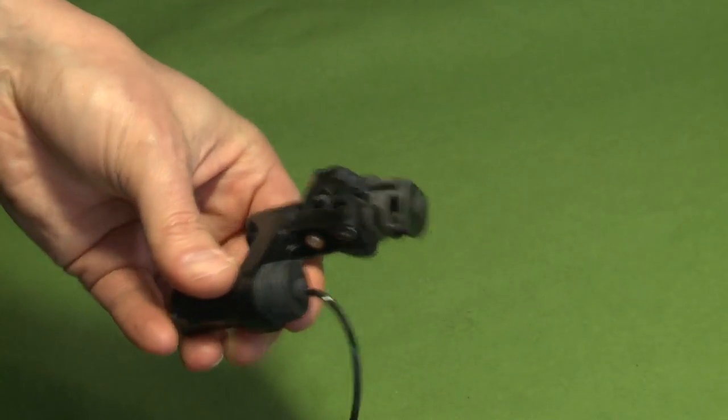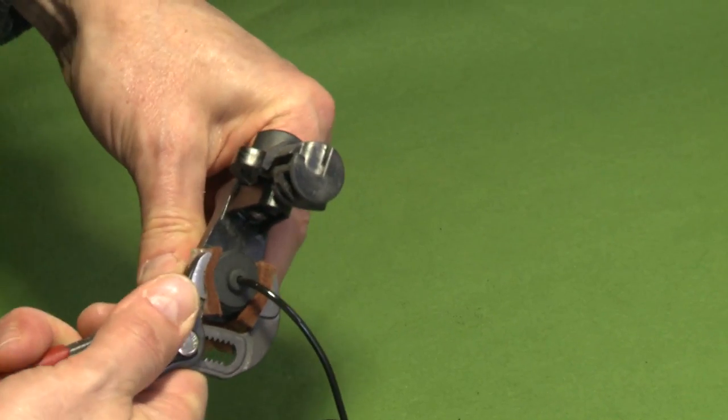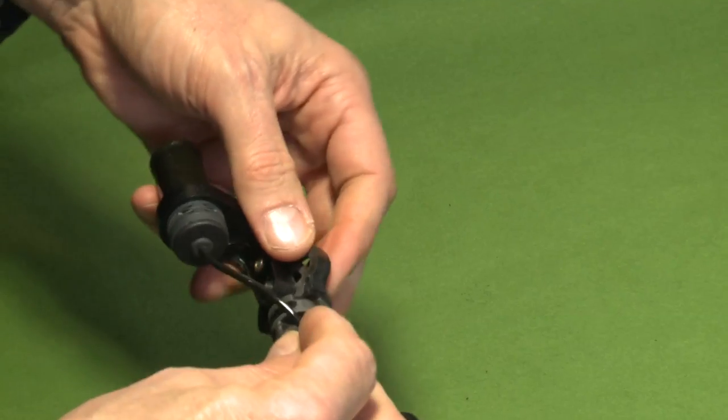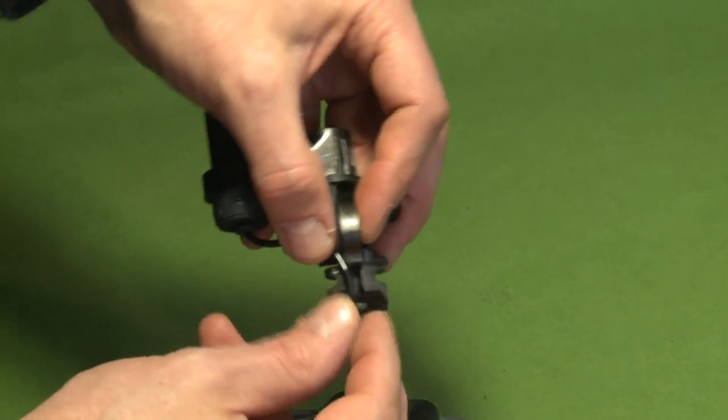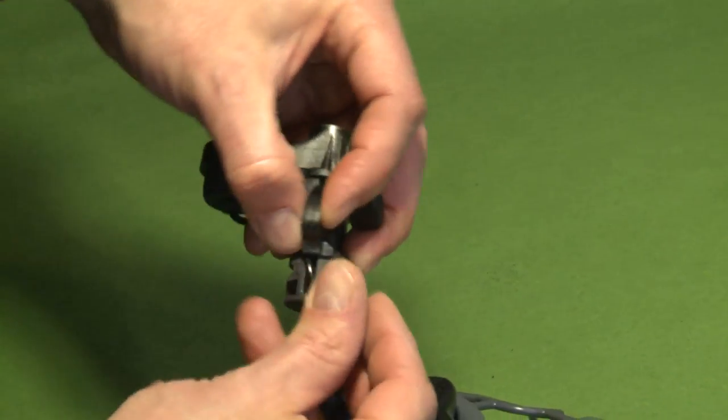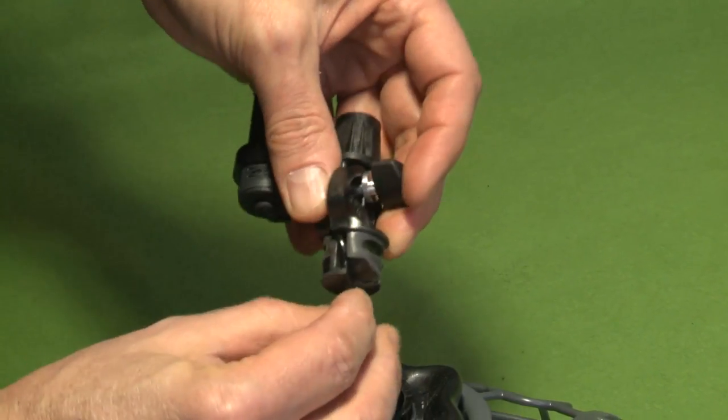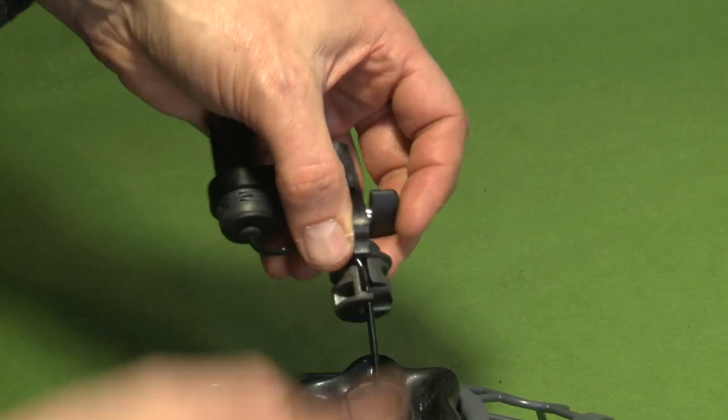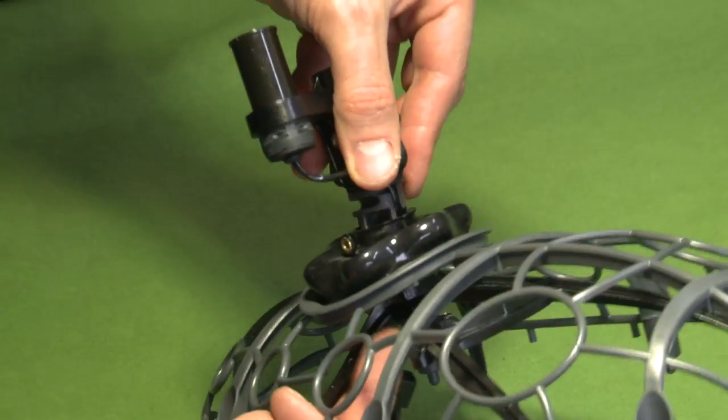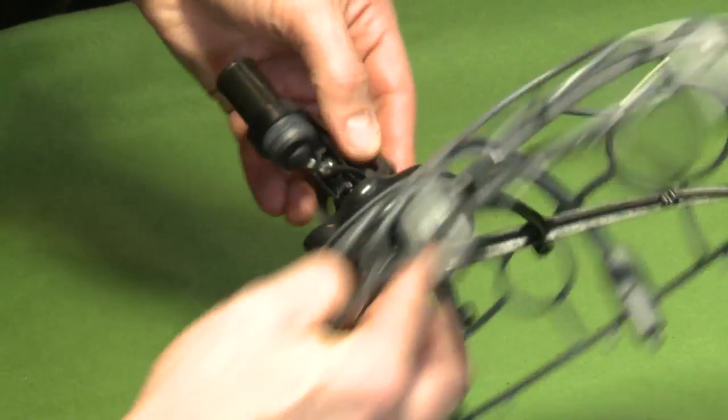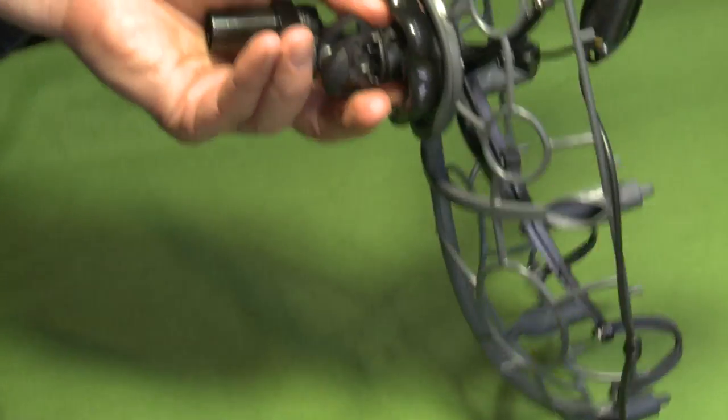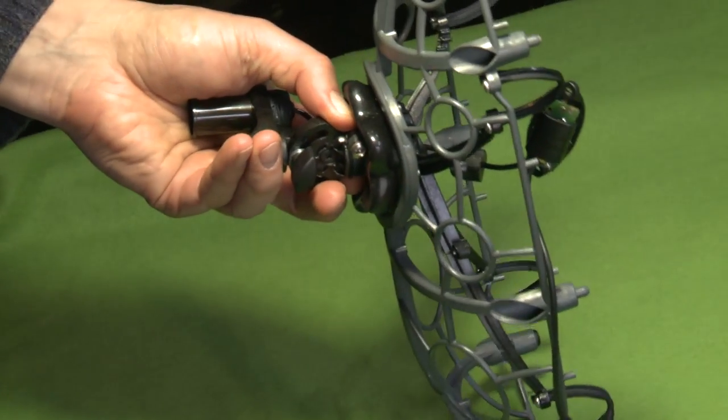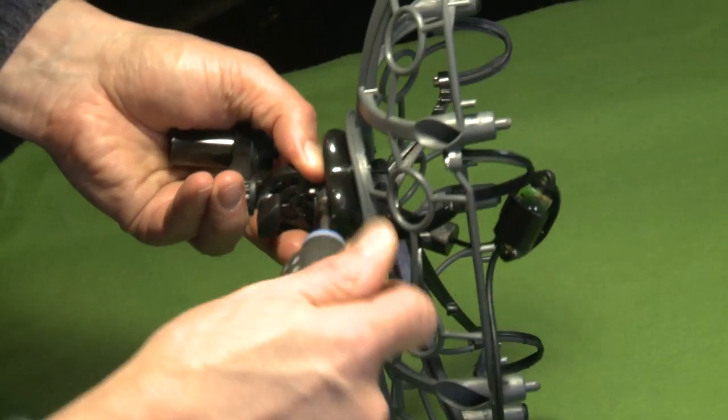Put the cable here like that. That's it. Make a very small loop here and back again in the hole. Put the screw first, gently, not a hard screwing.